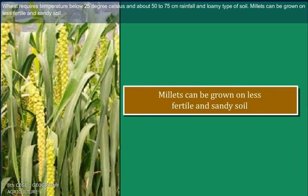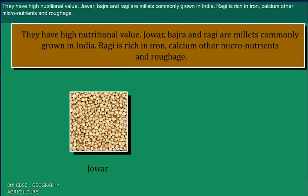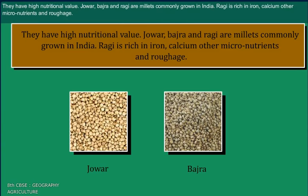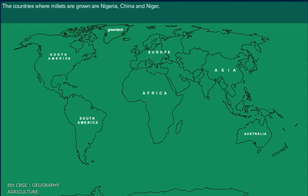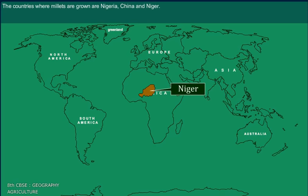Millets can be grown on less fertile and sandy soil. They have high nutritional value. Jowar, bajra, and ragi are millets commonly grown in India. Ragi is rich in iron, calcium, other micronutrients, and roughage. The countries where millets are grown include Nigeria, China, and Niger.